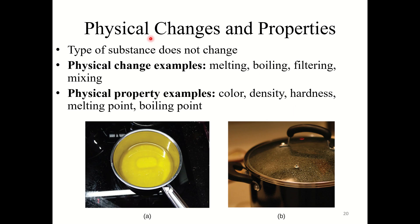A few examples of physical changes: melting, boiling, filtering, and mixing are all physical change examples. Nothing is happening chemically — we're just changing the physical arrangement in space of our matter. Some physical property examples would be color, density, hardness, melting point, and boiling point. All of these depend upon the physical makeup of the matter, not the chemical makeup.